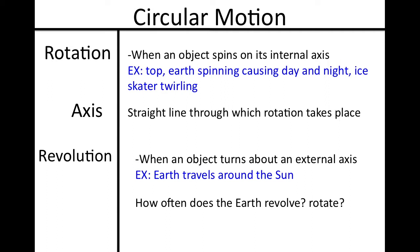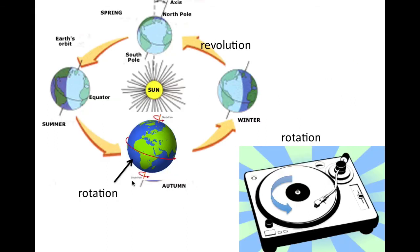Revolution is different from rotation in that it is when an object turns about an external axis. For example, the Earth traveling around the Sun — the Sun being the external axis or the center point. It's almost as if the object is traveling around another object or the center of something else. Revolution is where you are spinning around another center, an external axis — it is not within the object itself.